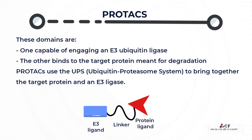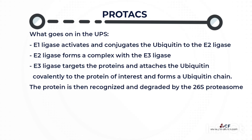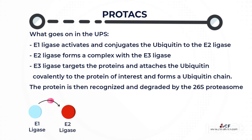The mechanism of action of PROTACs is through controlling the UPS — ubiquitin proteasome system — by bringing together the target protein and an E3-ligase. In the UPS, the E1-ligase activates and conjugates the ubiquitin to the E2-ligase, which then forms a complex with the E3-ligase.